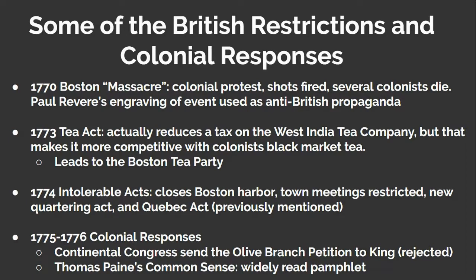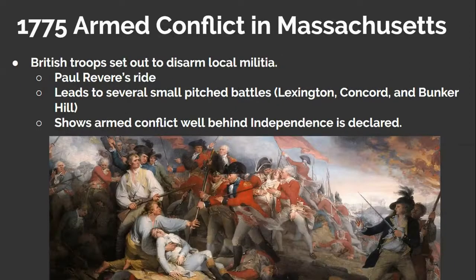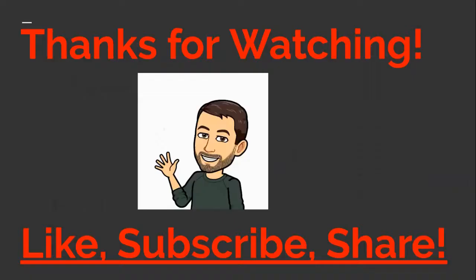In 1775 and 1776, there were several colonial responses to the Intolerable Acts. Colonies sent representatives to the Continental Congress, which drafted the Olive Branch Petition to the King of England, looking for compromise on British Acts and a decrease in tensions. However, the King rejected it. Early in 1776, Thomas Paine wrote Common Sense, which was a widely read pamphlet across all the colonies. Fighting had actually broken out well before the Declaration of Independence in some small-scale battles in Massachusetts. The British attempted to disarm Massachusetts' militia, but instead found themselves in a series of small-scale battles, including Lexington, Concord, and Bunker Hill.